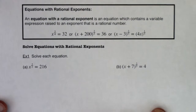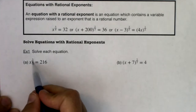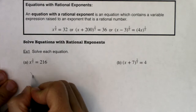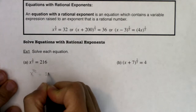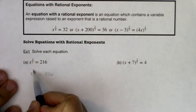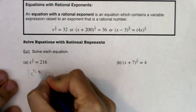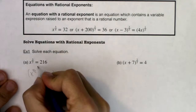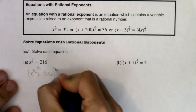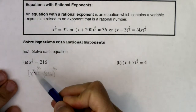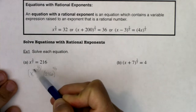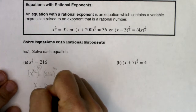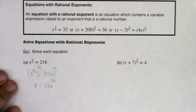Let's look at example one: x to the three-halves equals 216. I'm going to raise both sides to the reciprocal of three-halves, which is two-thirds. Using the power rules, a power raised to a power means we multiply the exponents — by design, three-halves times two-thirds equals one, so we just get x on the left. On the right side, we have 216 to the two-thirds power.